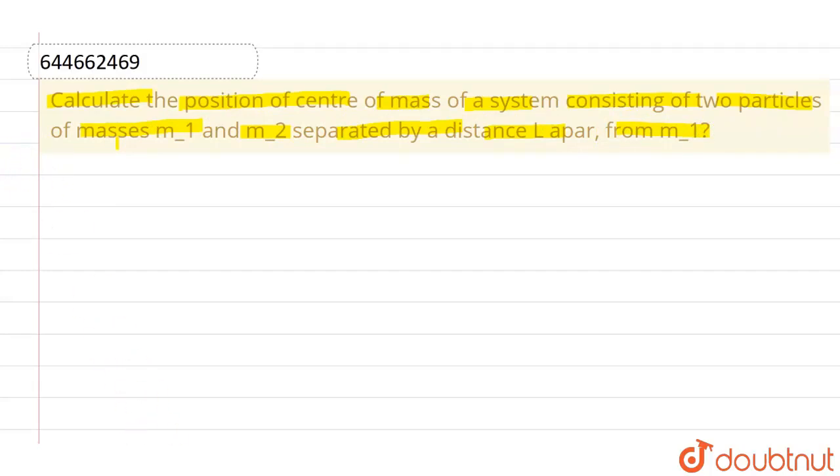Now let me consider a line. This is the line on which these two particles are separated. At this position, the mass m1 is there, and at this position, mass m2 is there.